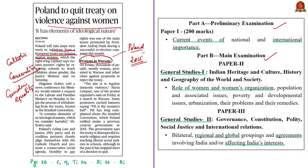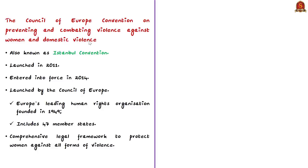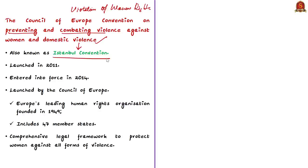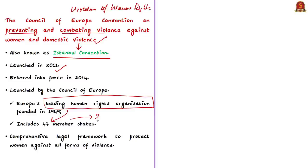Now let us see the important features of this treaty. Violence against women, including domestic violence, is one of the most serious forms of gender-based violations of human rights. These violations deprive women of their ability to enjoy fundamental freedoms and represent a serious obstacle to achieving equality between women and men. To address these issues, Europe has the Council of Europe Convention on Preventing and Combating Violence Against Women and Domestic Violence, also known as the Istanbul Convention. This convention was launched by the Council of Europe — Europe's leading human rights organization founded in 1949 with 47 member states — in 2011, and entered into force in 2014.